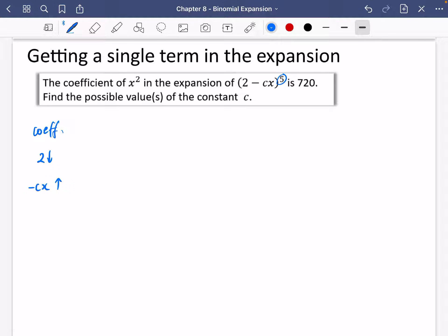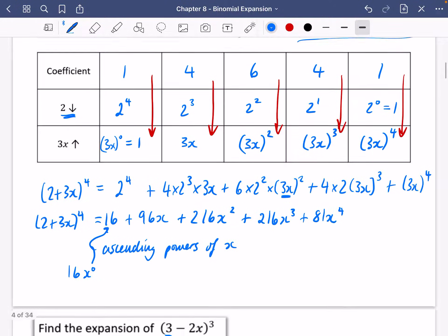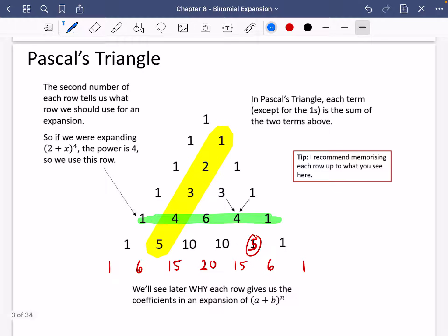So thinking of my Pascal's triangle, I know that the coefficients are going to be 1, 5, 10, 10, 5, 1. I'm just going to double check that by having a look at what I'd written before. Yep. 1, 5, 10, 10, 5, 1.